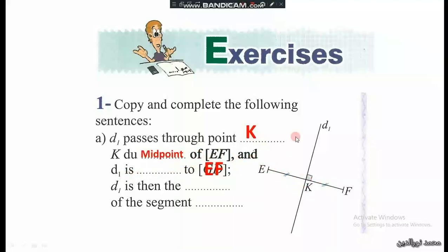d1 is perpendicular to EF. Then d1 is the perpendicular bisector of the segment EF.